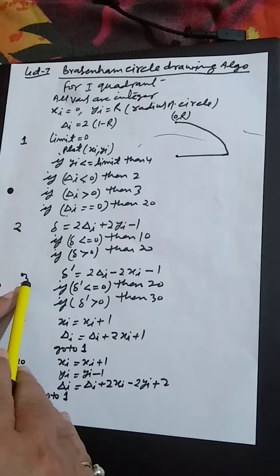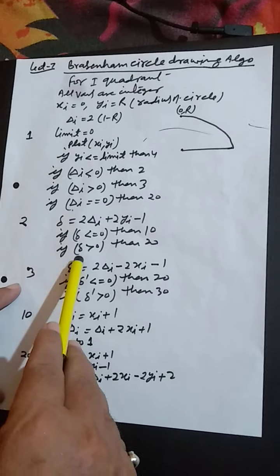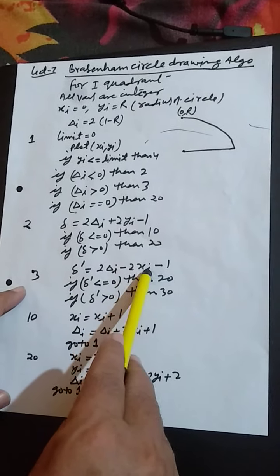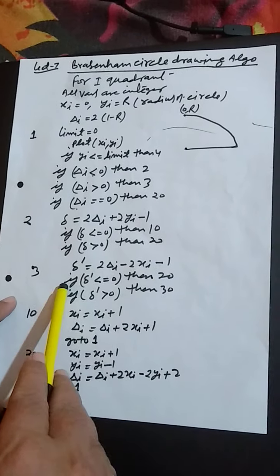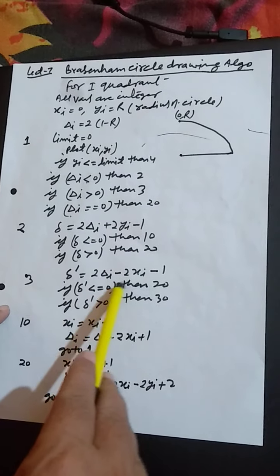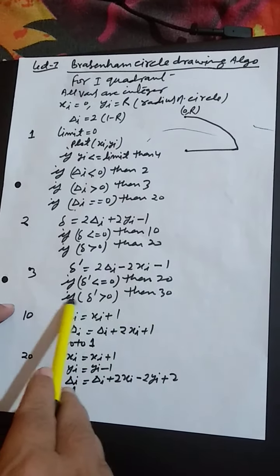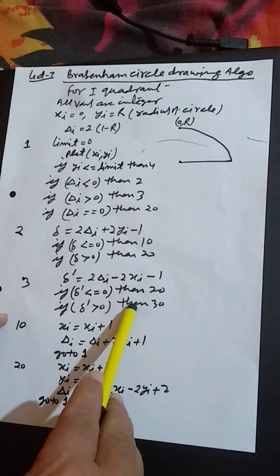On step 3, delta dash is equal to 2 delta i minus 2xi minus 1. If delta dash less than or equal to 0, then 20. If delta dash greater than 0, then 30.